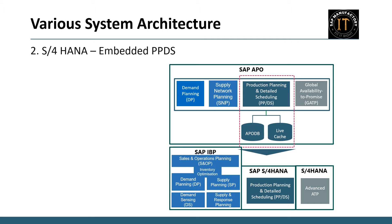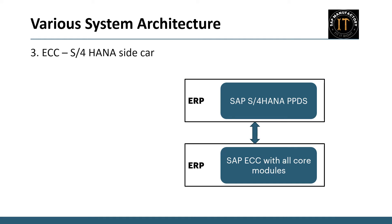Let's dive into the architectural setup of the sidecar. The fundamental modules remain rooted in ECC, yet S/4 HANA seamlessly integrates with ECC, replacing APO PPDS. The scope of demand planning and supply network planning might transition to SAP IBP. S/4 HANA in this scenario serves exclusively for PPDS. The rationale lies in integrating PPDS without altering the core SAP functionalities into S/4 HANA.